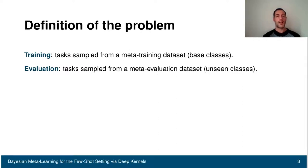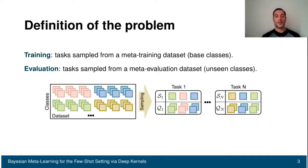At training and evaluation time, what we do is sample tasks from a meta-training and meta-evaluation dataset. This is represented in this slide. As you can see, we have a dataset of different classes. From this, we are going to sample the classes that are going to be used for our tasks.